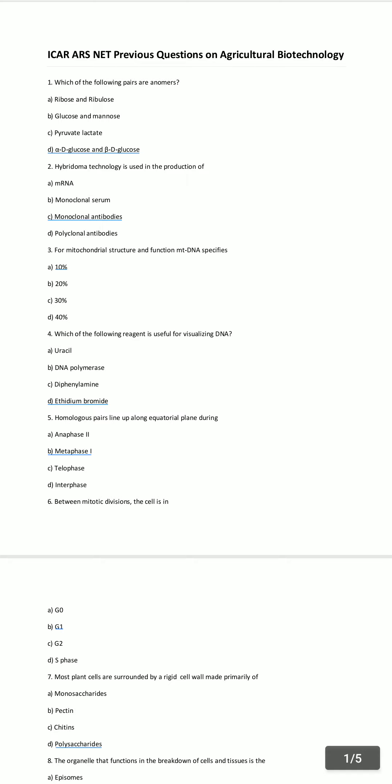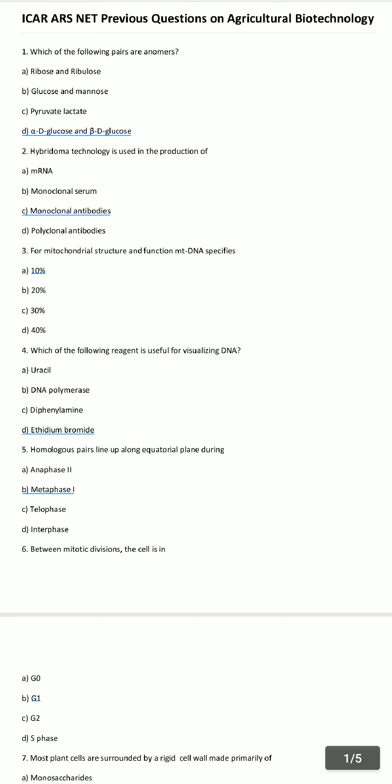Which of the following pairs are anomers? Anomers: alpha-D-glucose and beta-D-glucose. Hybridoma technology is used in the production of monoclonal antibodies.